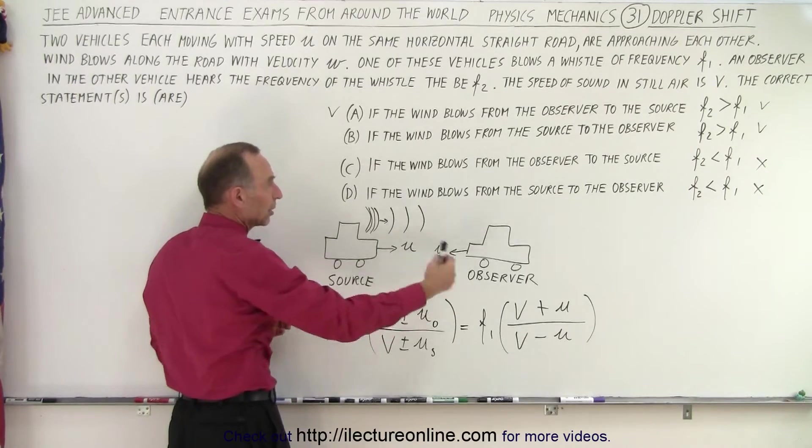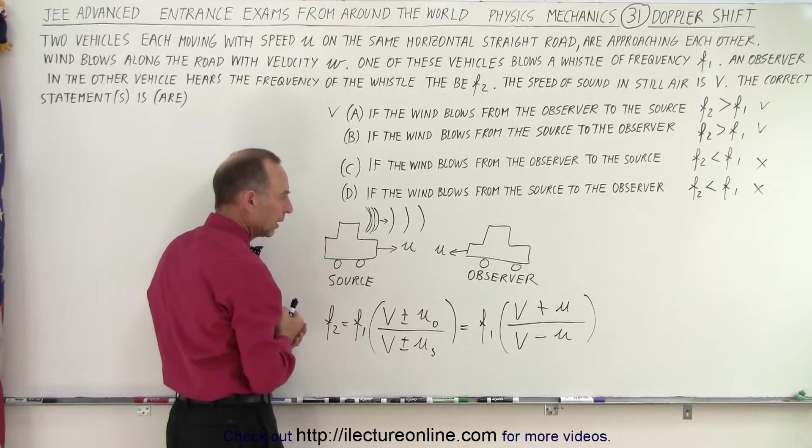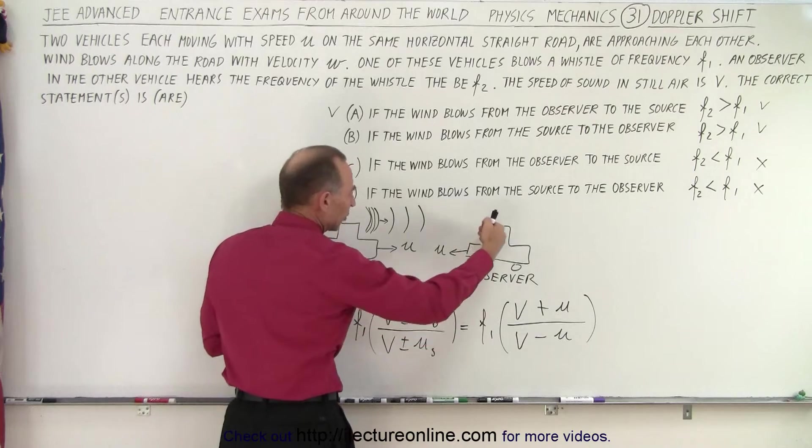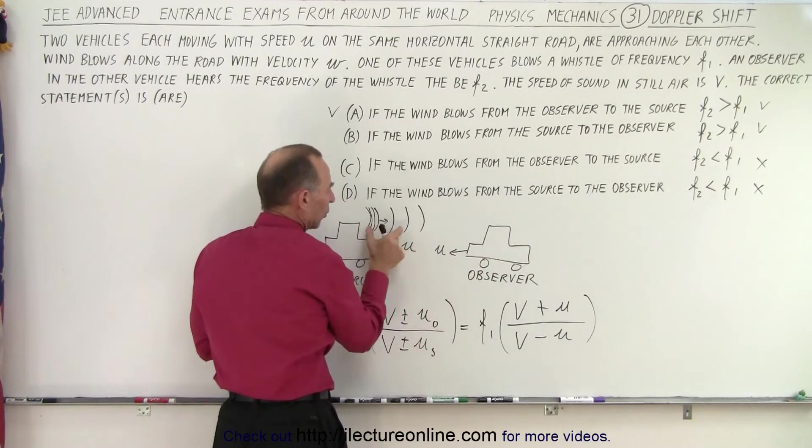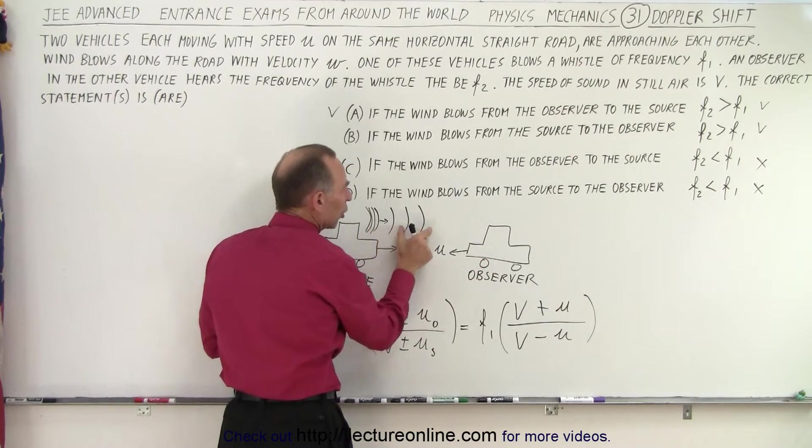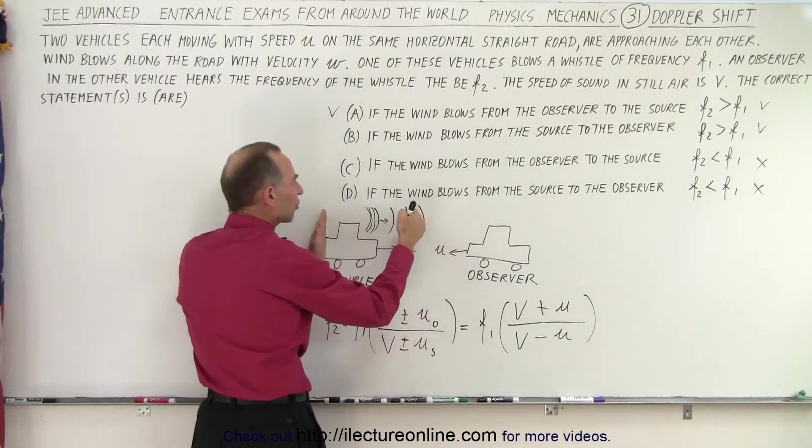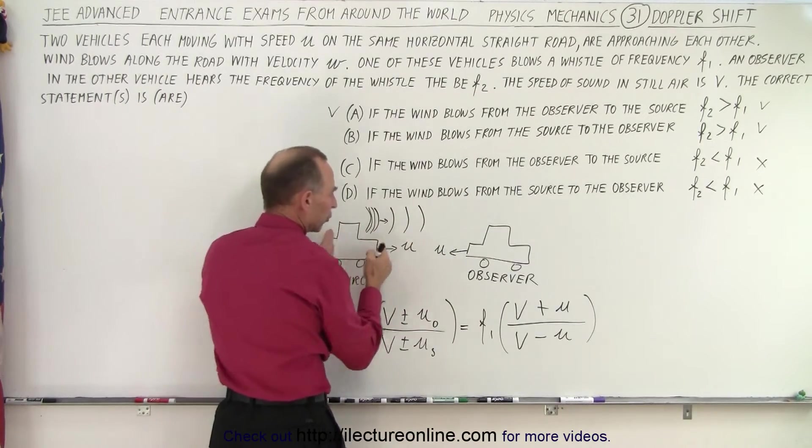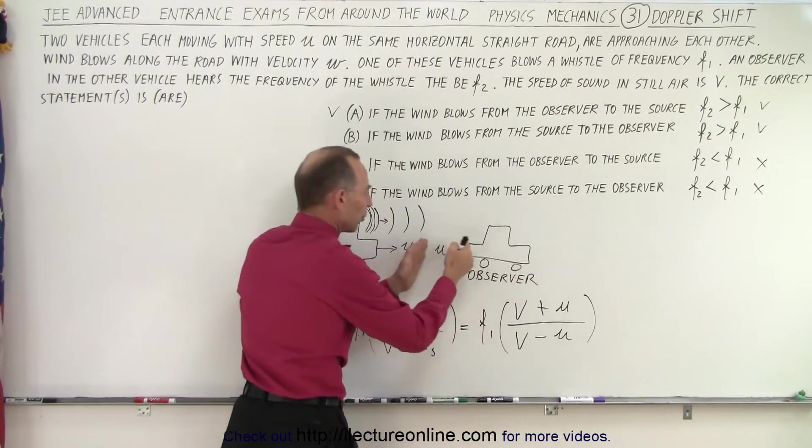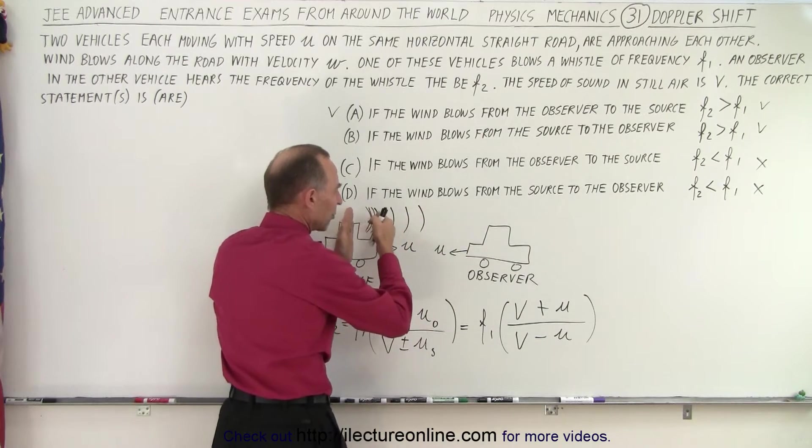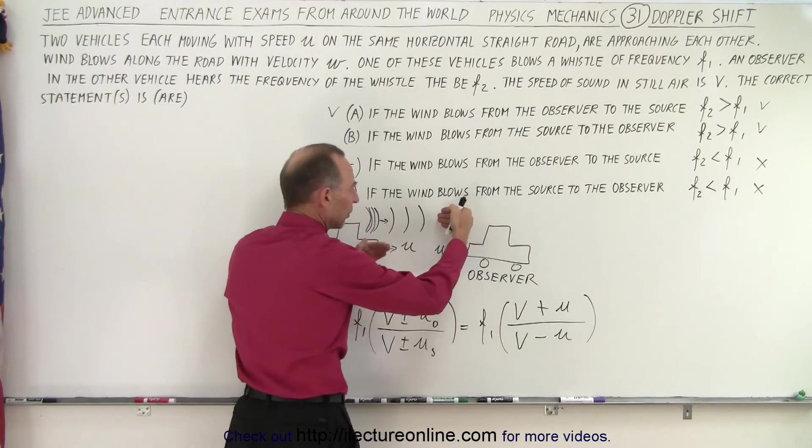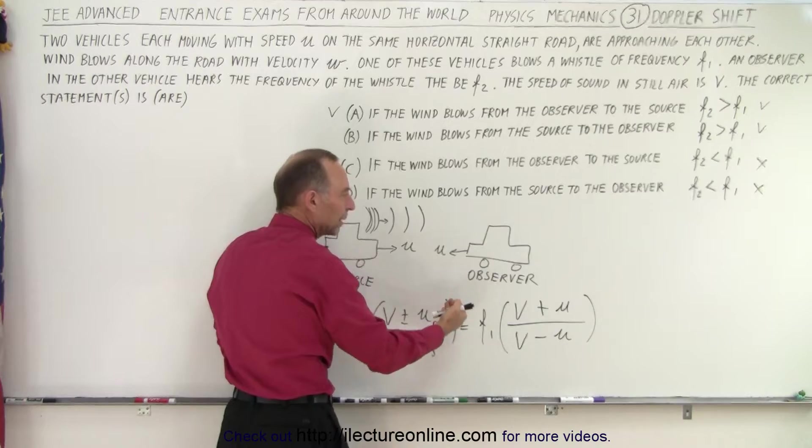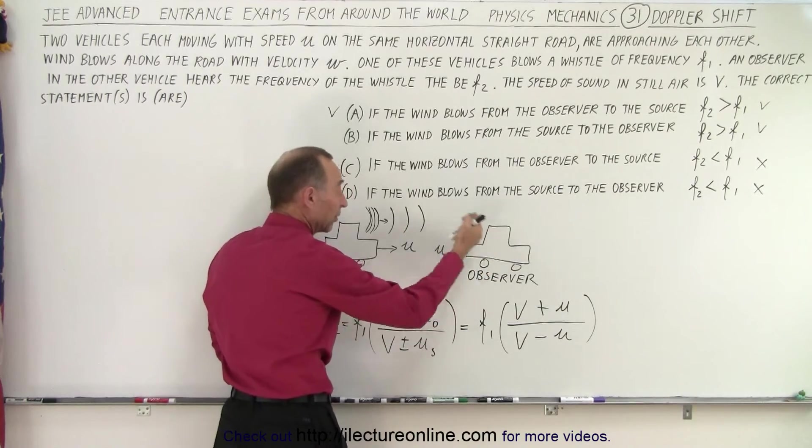How about if the wind is blowing in the other direction? Well if the wind is blowing in the other direction, what's going to happen is that the waves are going to be traveling slower because the air is moving in this direction. But the source is still moving towards the observer. The observer is still moving towards the source. So even though the waves are traveling slower because the wind is blowing this way,